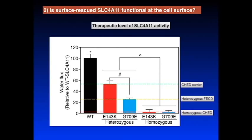For example, we found that in homozygous CHED there is less than 10% of SLC4A11 activity. In the case of heterozygous FECD condition, where patients manifest disease at a later stage of life, there is close to 25% SLC4A11 activity. And in the case of a CHED carrier, or the heterozygous CHED condition, there is close to 60% SLC4A11 activity. This data establishes benchmark SLC4A11 activity levels in order to either delay disease onset or cure the disease.